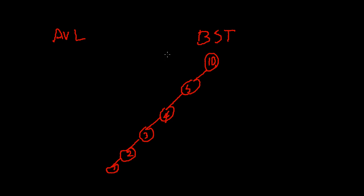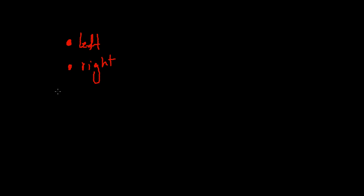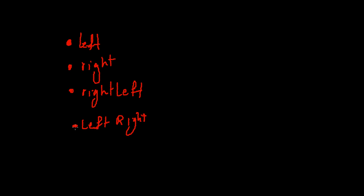AVL trees are BSTs that balance themselves whenever an imbalance happens. We need some strategy to balance our tree. We have 4 strategies for balancing our trees: a left rotation, a right rotation, a right-left rotation, and a left-right rotation. These are the rotations that are going to keep our tree balanced.